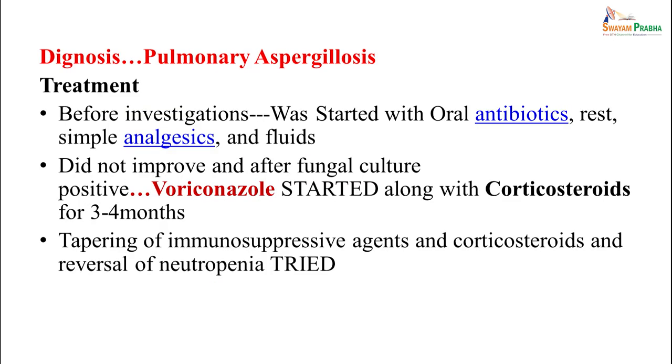Hence the patient was diagnosed as a case of pulmonary aspergillosis. Before investigations were completed, since he was having fever and cough he had been started on oral antibiotics with analgesics and fluids, but he had not improved. Later, after the fungal culture grew the fungus, he was changed to voriconazole, started along with steroids, and this was to be taken for the next 6 to 8 months, with steroids being tapered off as and when possible.